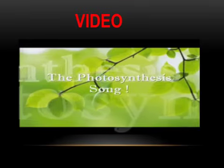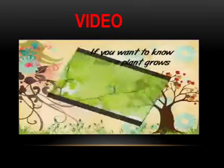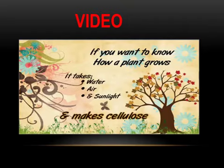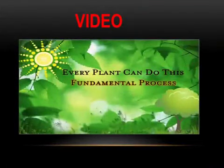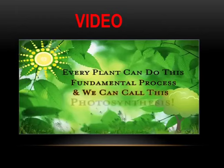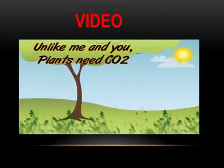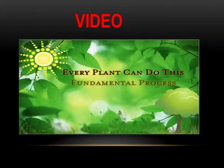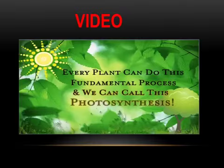If you want to know how a plant grows, it takes water, air, and sunlight and makes cellulose through photosynthesis. Every plant can do this fundamental process, and we can call this photosynthesis. Unlike me and you, plants need CO2 and they make oxygen. Every plant can do this fundamental process, and we can call this photosynthesis.